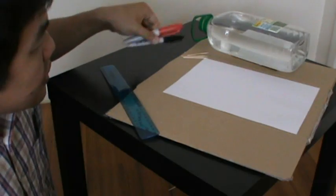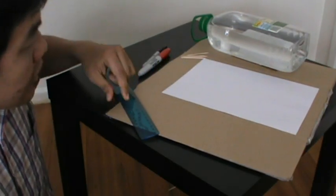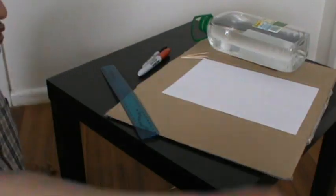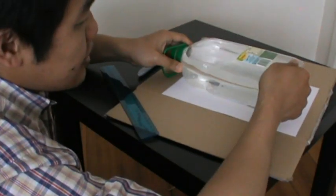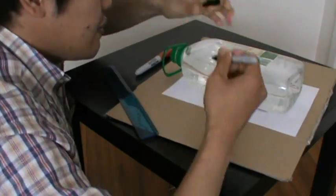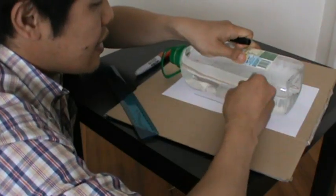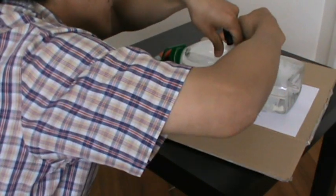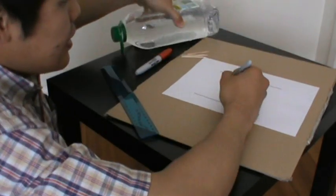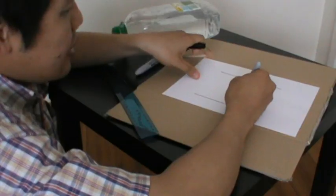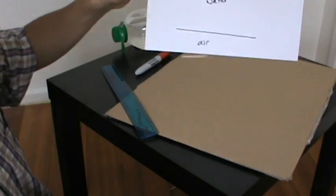And we will need a marker and then a piece of paper and cardboard. So the first thing we will need to do is to place this container on the paper, and now we can draw the boundary of this container. So here we will have three media: the water, the air, and also the air like this.